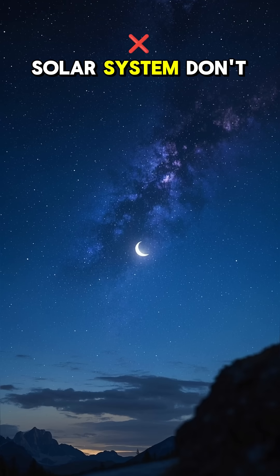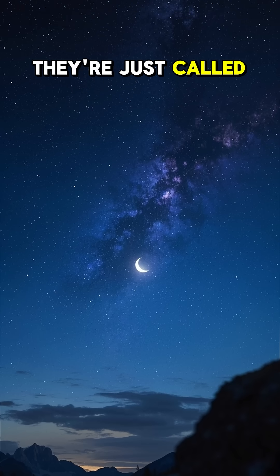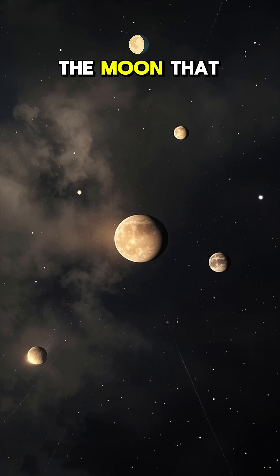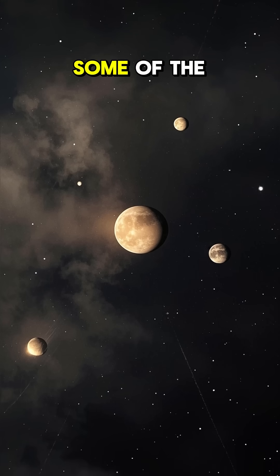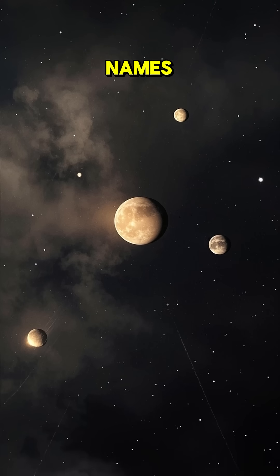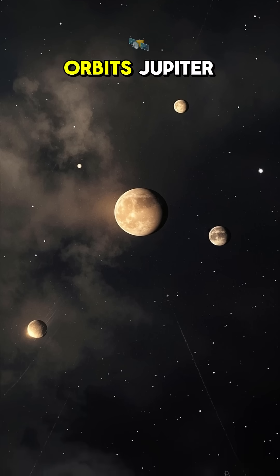Most of the moons in our solar system don't have names. They're just called moons. For example, the moon that orbits Mars. But some of the moons do have names. For example, the moon that orbits Jupiter.